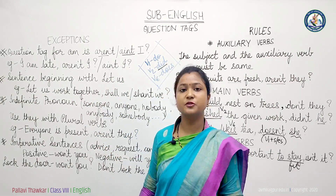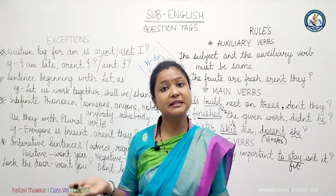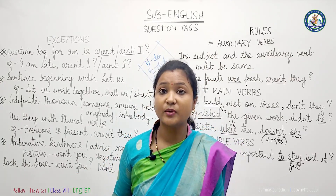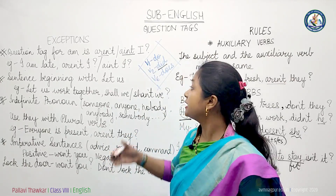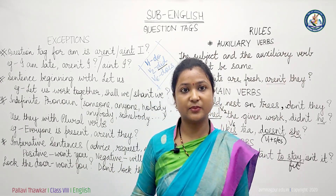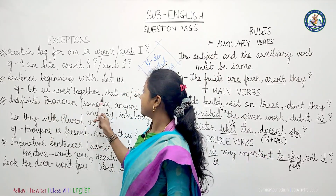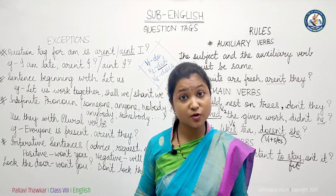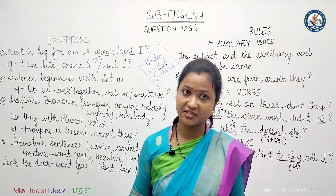Let's move to the next rule. If the sentence begins with 'let' or 'let us', we will use 'shall we' or 'shan't we'. For example, 'Let us work together, shall we?' or 'Let us work together, shan't we?' — both are correct.